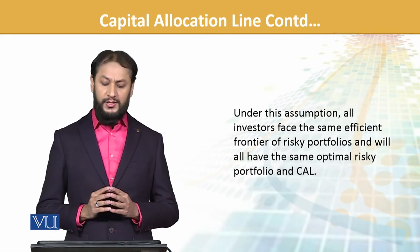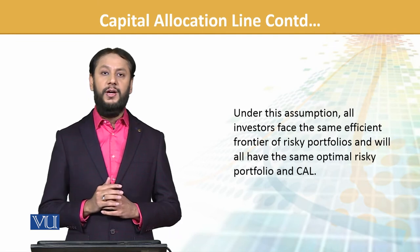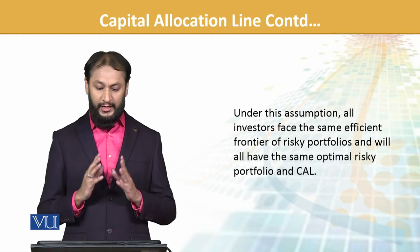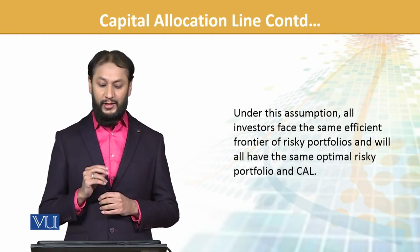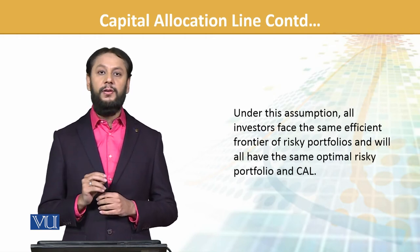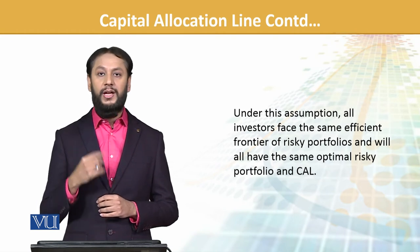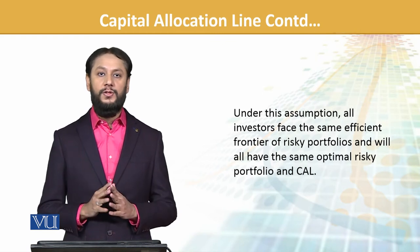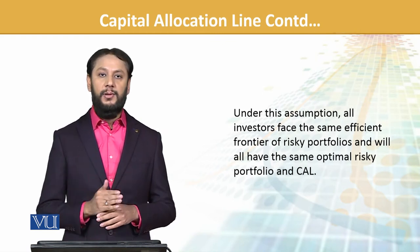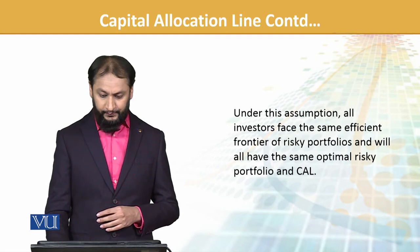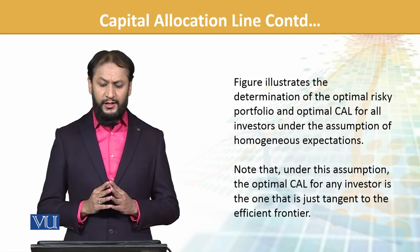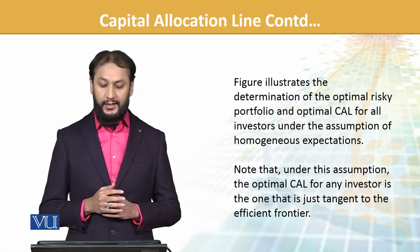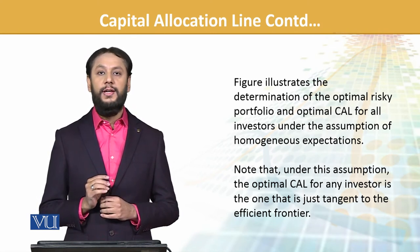Under this assumption, all investors face the same efficient frontier — first it was different, but now in this structure everyone will have the same optimal risk portfolio. So we have homogenous expectation — homogenous means similar for all. The figure illustrates the determination of the optimal risky portfolio and optimal CAL for all investors under the assumption of homogenous expectation.